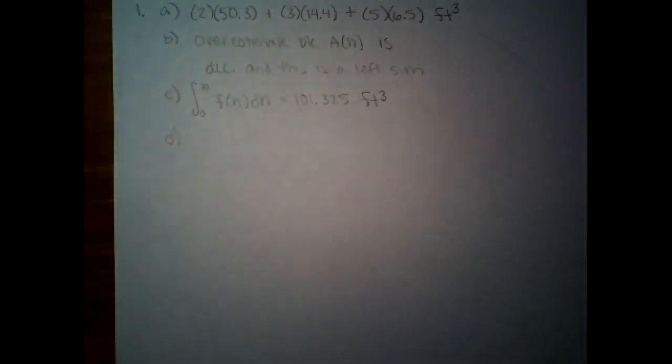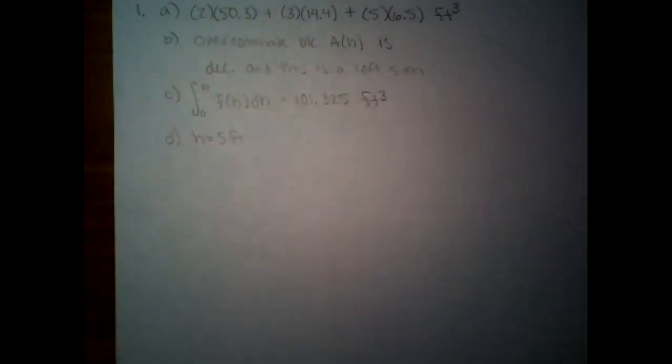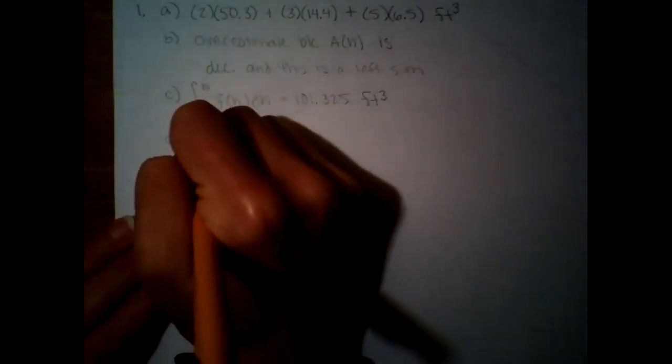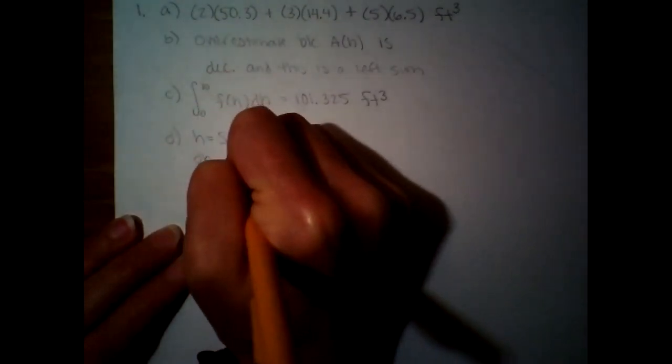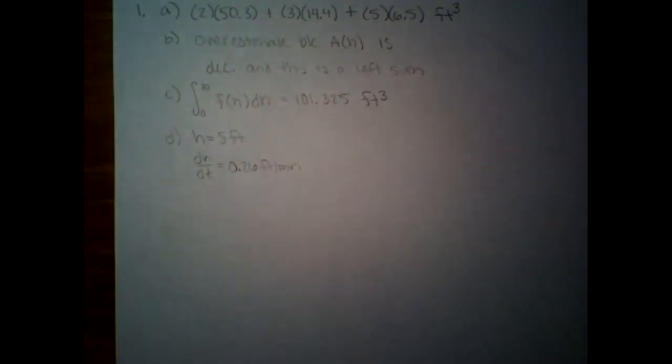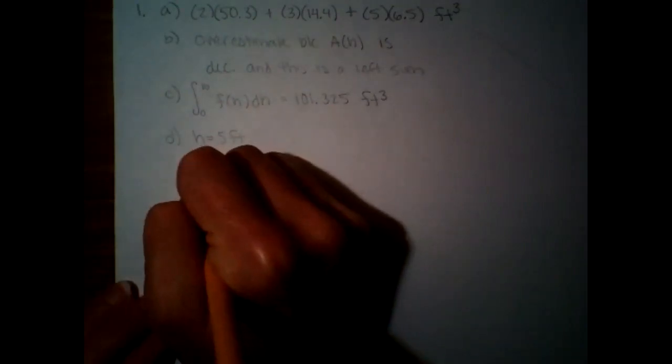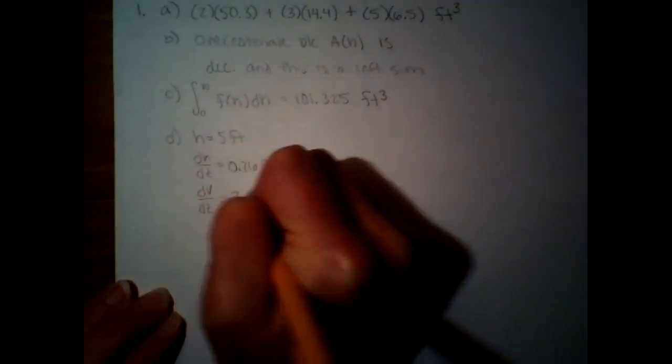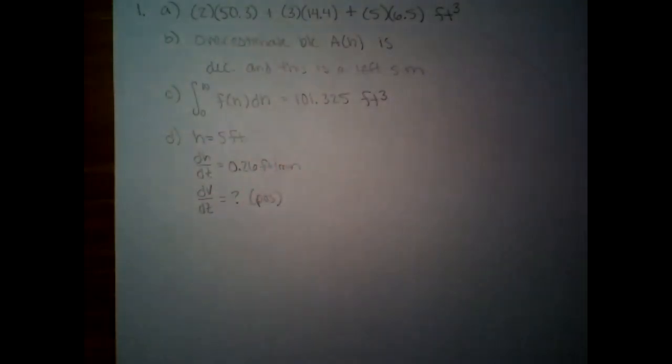All right, and then Part D, water is being pumped into the tank. The height of the water is 5 feet. I'm going to list out what they tell us here. And the height is increasing at a rate of 0.26 feet per minute. So that's dH/dt. The height is increasing 0.26 feet per minute. So we're filling the tank up. Using that equation from Part C that they gave, that 50.3 over whatever. Using that, find the rate at which the volume of water is changing with respect to time. So dV/dt is what we want. It should be positive since the tank is filling up. And it says when the height of the water is 5 feet. They kind of said that twice in there. Indicate units of measure.